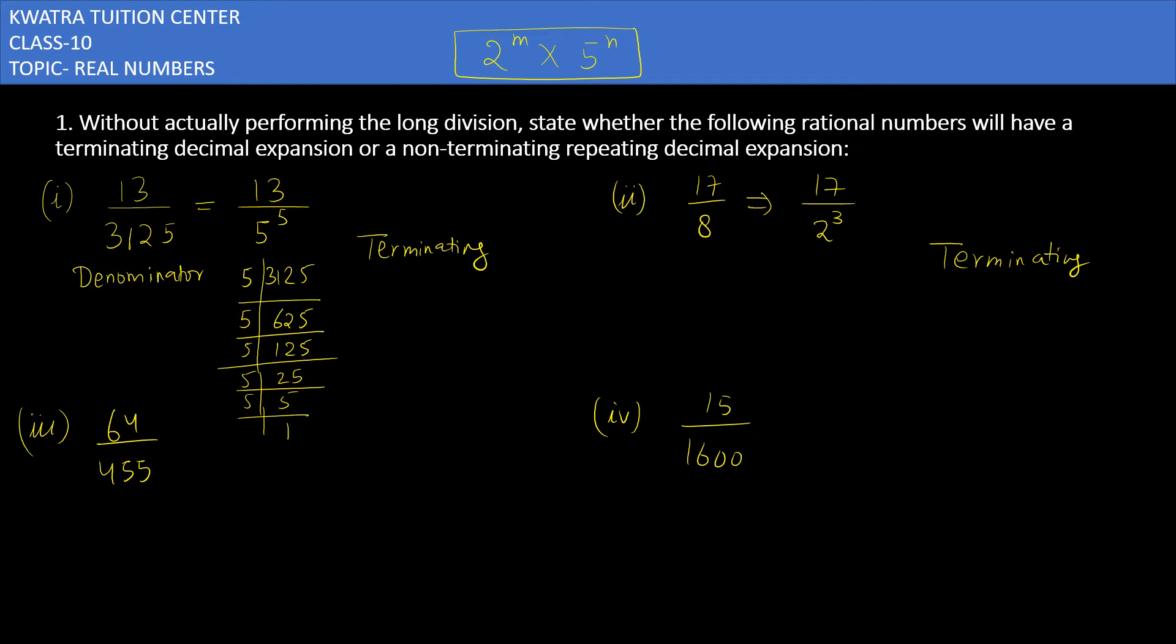Now the next number is 64 over 455. Again, what do you want to do? You have to take the factorization of 455. 455 we can divide by 5, so it will give you 91. Now 91 can you divide by yourself. You can divide it with 7, so it will give you 13. So you have 3 numbers: 5, 7, and 13. That means this number will be non-terminating because it has factors as 5, 7, and 13. So it will be non-terminating and repeating one.